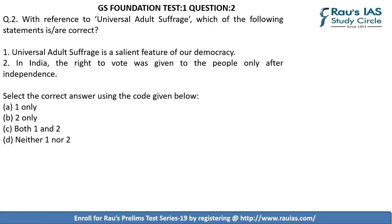Moving on to the second question, with reference to universal adult suffrage, the first statement says that universal adult suffrage is a salient feature of our democracy. Statement 1 is correct because as soon as India got independent, there was universal adult suffrage — the right to vote for everybody considered to be an adult — and hence it is a salient feature of our democracy.